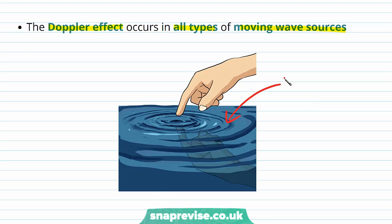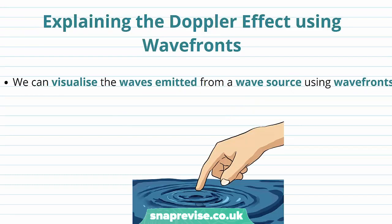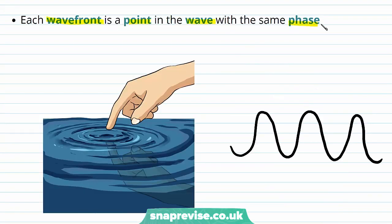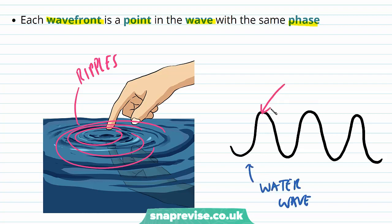For example, these water waves here. We can visualise the waves emitted from a wave source using wave fronts. For these water waves the wave fronts are coming out from the person's finger like so. Each wave front is a point on the wave with the same phase, and we see these wave fronts coming out as ripples. The ripples in the water are the maximum upward displacement points of the travelling water wave, which we see in the water as ripples.